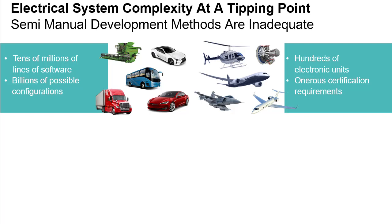If we look at some aerospace examples, the sheer scale of the electrical system becomes staggering — hundreds of electronic control units and hundreds of thousands of wires to connect them together. Additionally, the requirements for certifying a product are significant and rely heavily on data of the as-designed, as-built, and as-upgraded being accurate and always available.